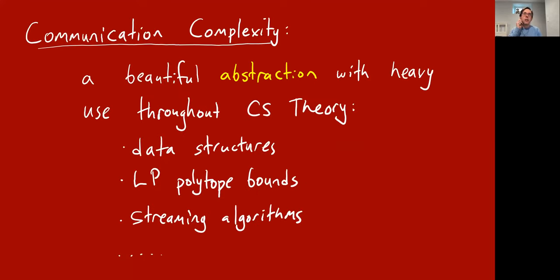Communication complexity is a really beautiful, abstract model for computation that has tremendous use throughout computer science theory — it infiltrates almost all branches. Three particular areas it's used a lot are the study of data structures lower bounds, the size of linear programming relaxations, and streaming algorithms. But these are just three of many many possible application areas.